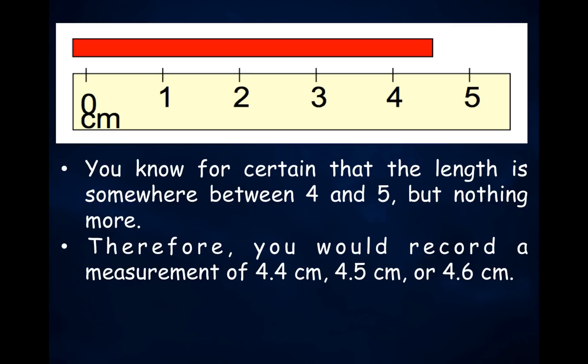Therefore, you would record a measurement of 4.4, 4.5, or 4.6 centimeters. This measurement has two significant digits. The 4 is measured, and the 0.4, 0.5, or 0.6 are estimates. All three measurements would be accurate measurements for this red line using this particular ruler.